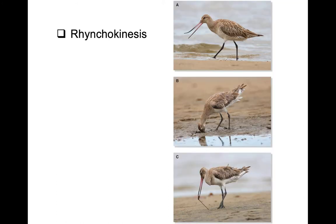Another really cool thing that birds can do is show what is called rhynchokinesis — the ability of birds to take just the tip of their bills and move that independent of the base of the bill. This is particularly important in birds like a curlew that has to reach way down deep into the sediment to grab something. Just imagine your arms buried in the sand — you couldn't open them due to resistance, but you could wiggle the tips of your fingers to grab something at the bottom. That's exactly what these shorebirds with really long bills can do.